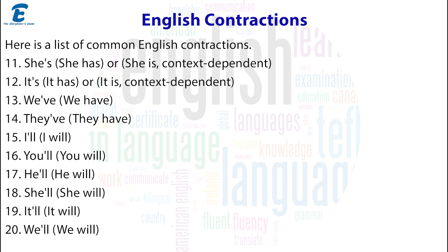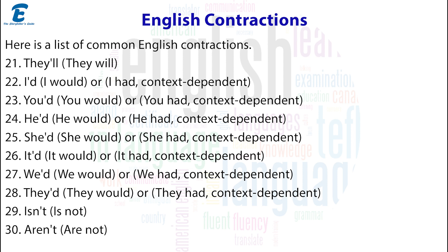20. We'll = we will. 21. They'll = they will. 22. I'd = I would or I had (context dependent). 23. You'd = you would or you had (context dependent). 24. He'd = he would or he had (context dependent). 25. She'd = she would or she had (context dependent). 26. It'd = it would or it had (context dependent). 27. We'd = we would or we had (context dependent). 28. They'd = they would or they had (context dependent).